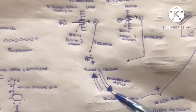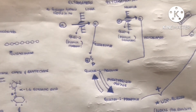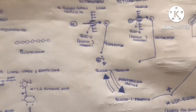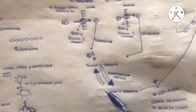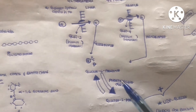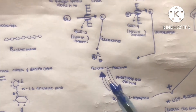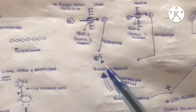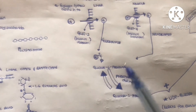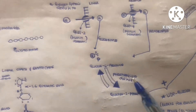Glucose-6-phosphate is then converted to glucose-1-phosphate by the enzyme phosphoglucomutase. We need glucose-1-phosphate rather than glucose-6-phosphate to form glycogen. This reaction is reversible — glucose-6-phosphate can be converted to glucose-1-phosphate, and glucose-1-phosphate can also be converted back to glucose-6-phosphate by the same enzyme, phosphoglucomutase.